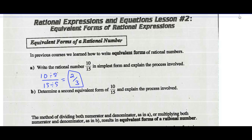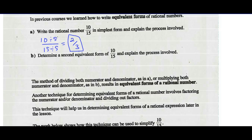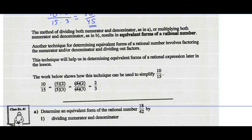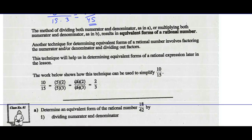Determine a second equivalent form of 10/15. We could also multiply the top and bottom by the same number. So let's say I multiply the top by 3 and the bottom by 3 — we would get 30/45. That is also an equivalent form, but it is not simplest form. To find simplest form, we want to divide by the highest factor common to both numerator and denominator. To find an equivalent form, as long as we do the same thing to the numerator as we do the denominator, we're going to get an equivalent form. So the method of dividing both, or multiplying both numerator and denominators, results in equivalent forms of a rational number.